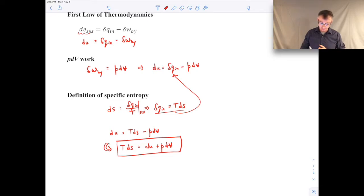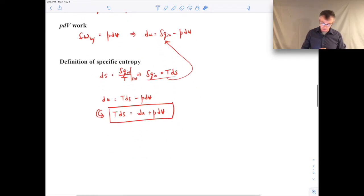In addition, our expression for specific entropy, this comes from, I should probably mention that this is reversible as well, internally reversible process. We can just rearrange that. Since we're talking about a quasi-static internally reversible process, we can substitute that in here, do some rearranging, and we end up with that expression.